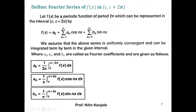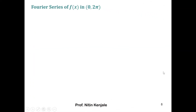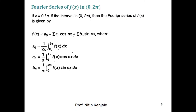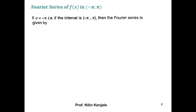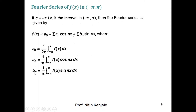On similar lines, you can find the Fourier series of f(x) in the interval 0 to 2π. To do so, replace all c's in the definition by zero — the integration limits become 0 to 2π and everything else remains the same. Similarly, for the interval −π to π, substitute c = −π, giving the Fourier series as a₀ + summation of aₙ cos(nx) + bₙ sin(nx) with a₀, aₙ, and bₙ having the corresponding expressions.